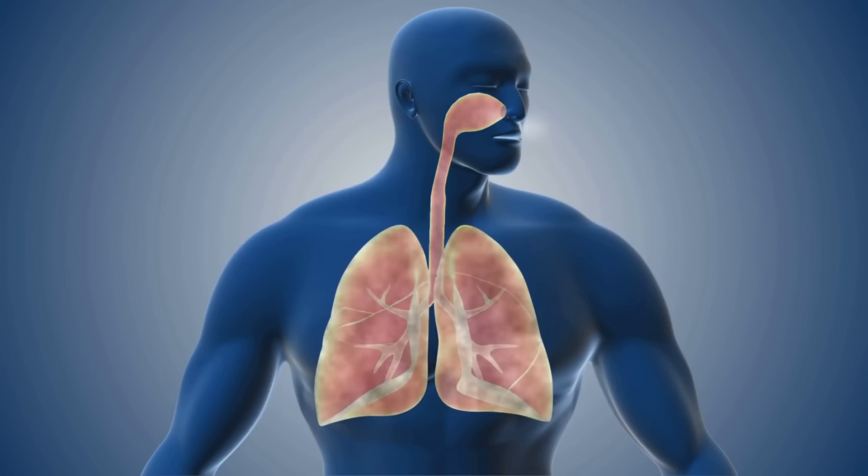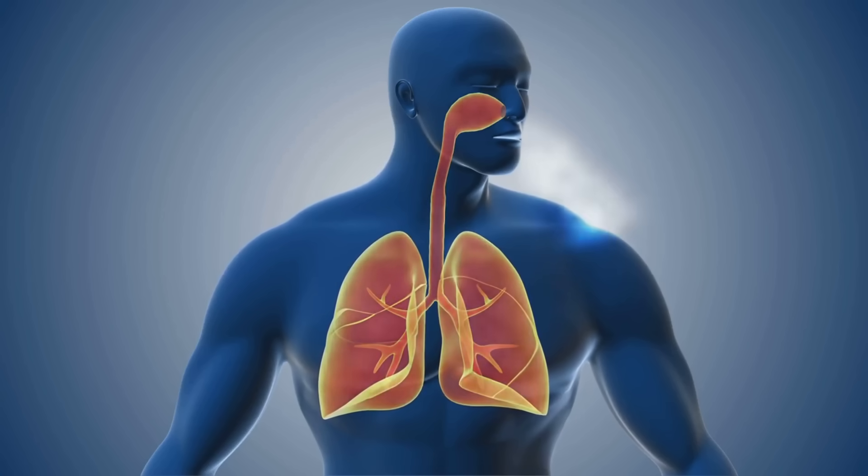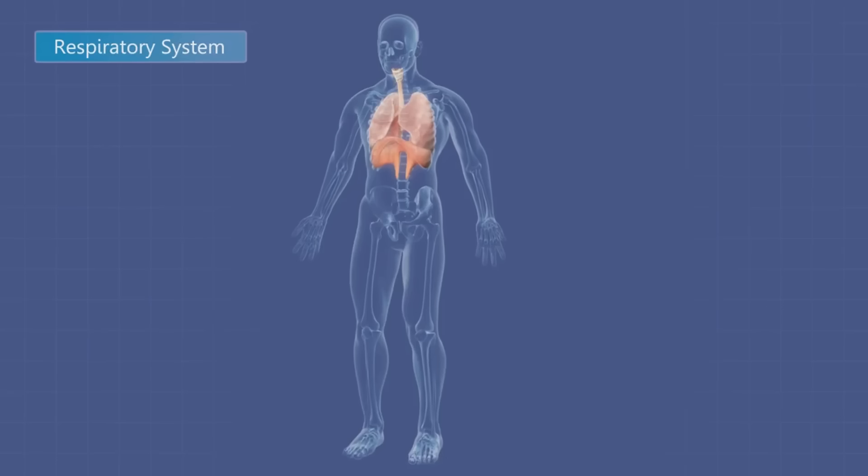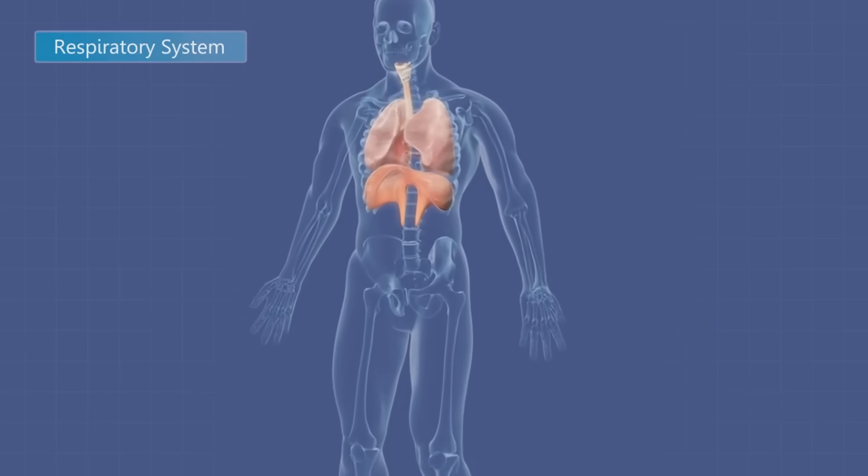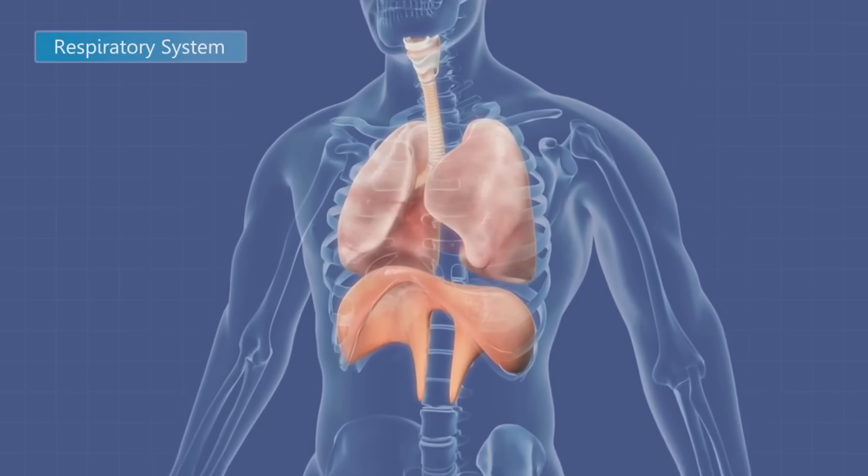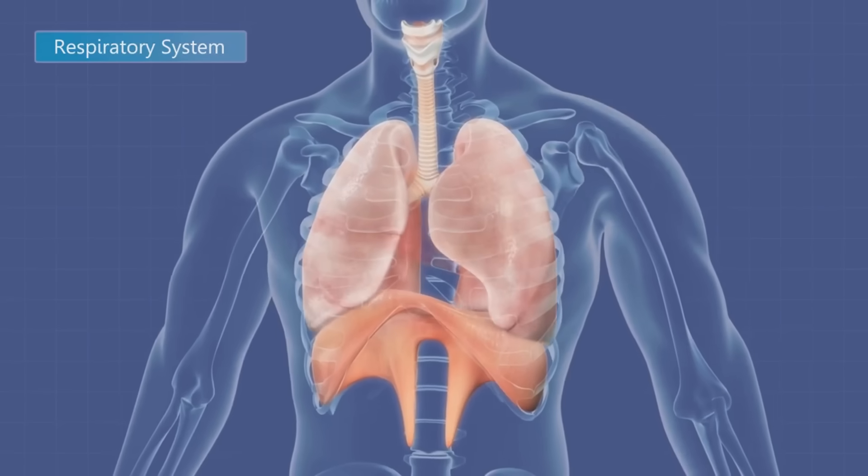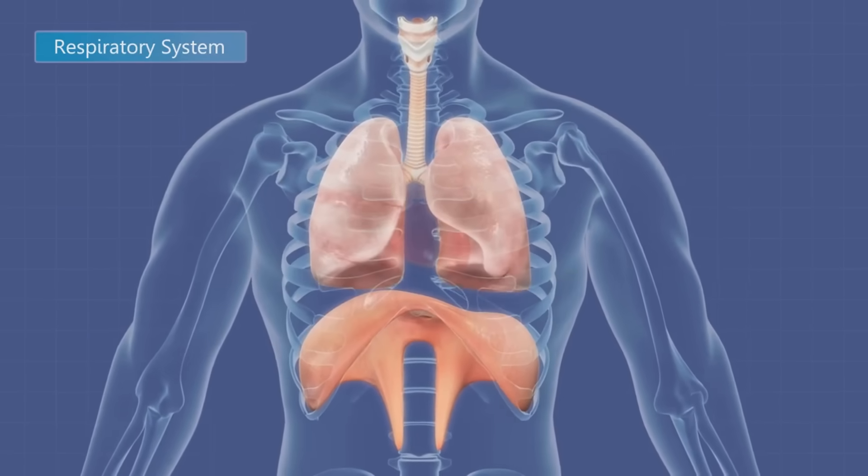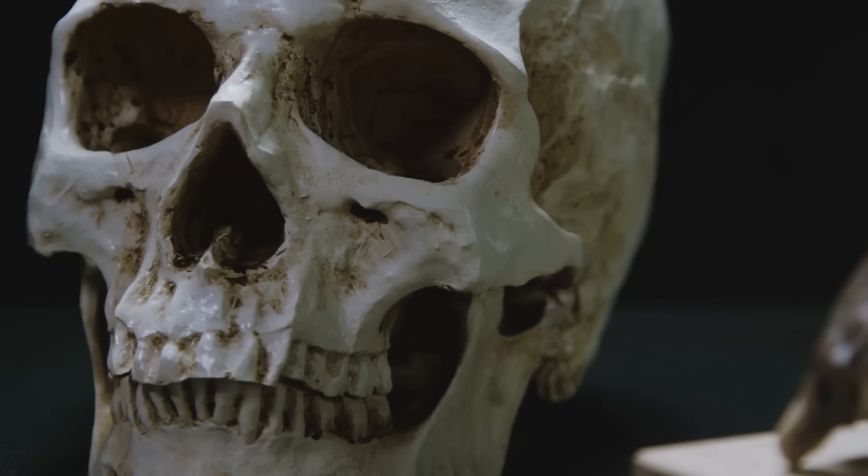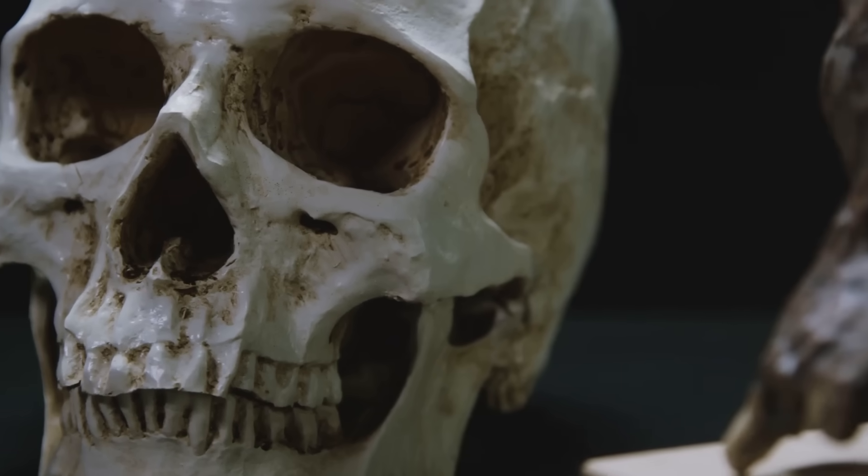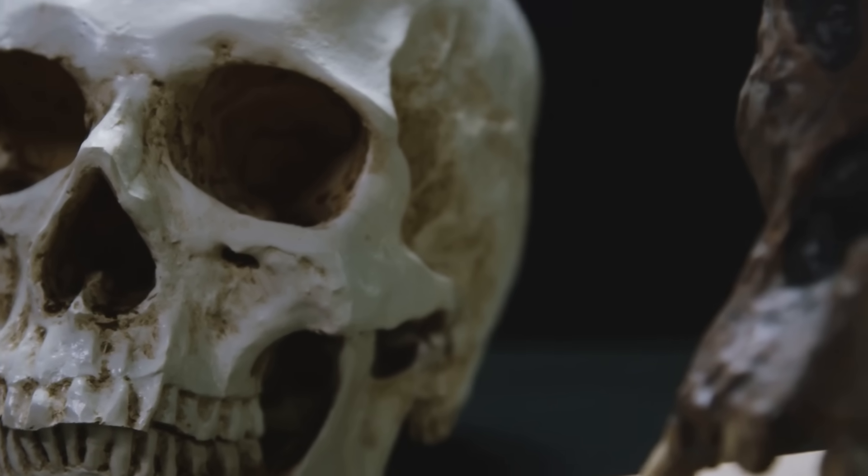When we inhale, the air we breathe in needs to be warmed and humidified before it reaches our lungs. This is where a longer nose comes in handy. It provides a larger surface area for the inhaled air to get warmed up and moistened, making it easier to breathe in colder temperatures. So, in essence, a longer nose was a clever adaptation by the Neanderthals to their icy homes.